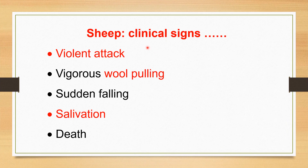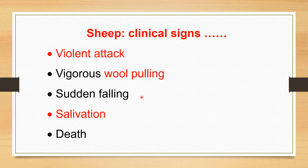Some animals attack violently to other sheep, other animals, or human beings. Because of the excitation, the sheep vigorously pulls its own wool. Then paralysis starts, there is sudden falling to the ground, hypersalivation, and death of the animal.